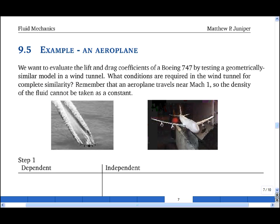Here's another example. We want to evaluate the lift and drag coefficients of a Boeing 747 by testing a geometrically similar model in a wind tunnel. It has the same shape but a very different size. What conditions are required in the wind tunnel for complete similarity? Remember that an airplane travels near the speed of sound, Mach 1, so the density of the fluid cannot be taken to be uniform and constant.